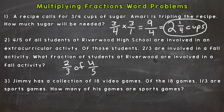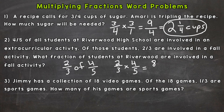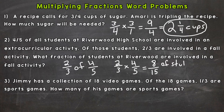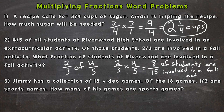Whenever we have 'of' problems — whether it's a fraction of a fraction, fraction of a whole number, or fraction of a mixed number — we can use multiplication to solve. We can replace that 'of' with a multiplication sign. So: two-thirds times four-fifths. Multiplying straight across: two times four is eight, and three times five is 15. That fraction is in simplest form, so eight-fifteenths of students are involved in a fall activity.